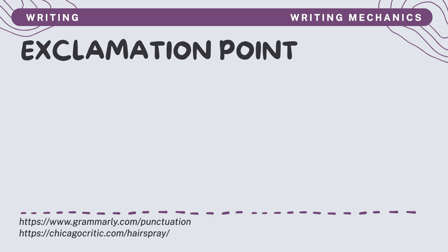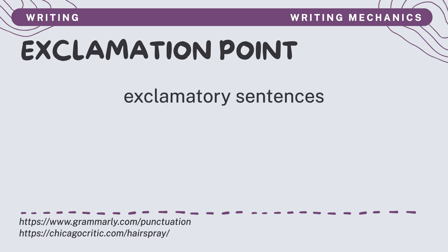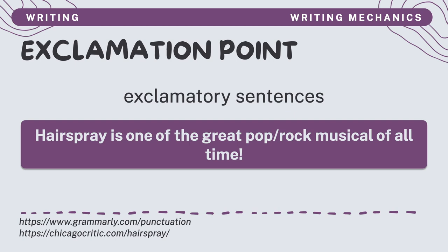Next is the exclamation point, also called the exclamation mark, and it ends exclamatory sentences. An exclamatory sentence is one that expresses a strong or forceful emotion such as anger, surprise, or joy. For example, 'Hairspray is one of the great pop or rock musicals of all time!' The hardest thing about using an exclamation point is probably knowing when not to use one. In writing, it's often hard to convey emotion, but an exclamation point can help make it clear by conveying your excitement.